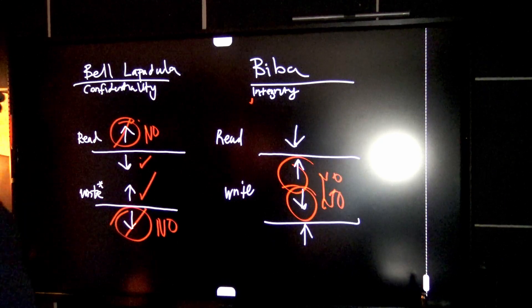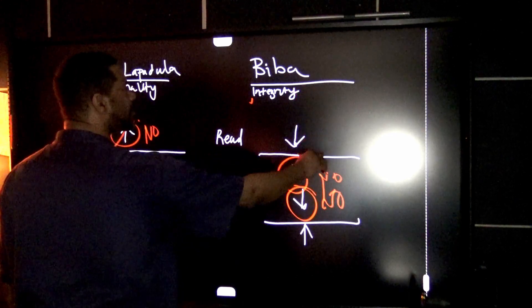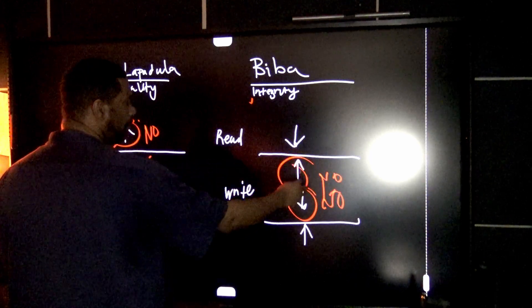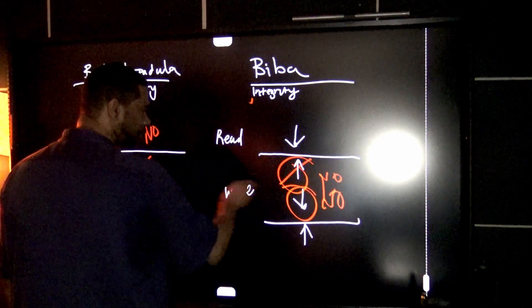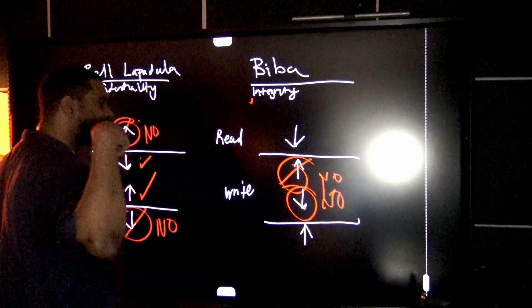And if we're using the Biba integrity model, that means we are allowed to read down, but we cannot read anything above our level. Same thing with writing, we cannot write down, but we can write up.